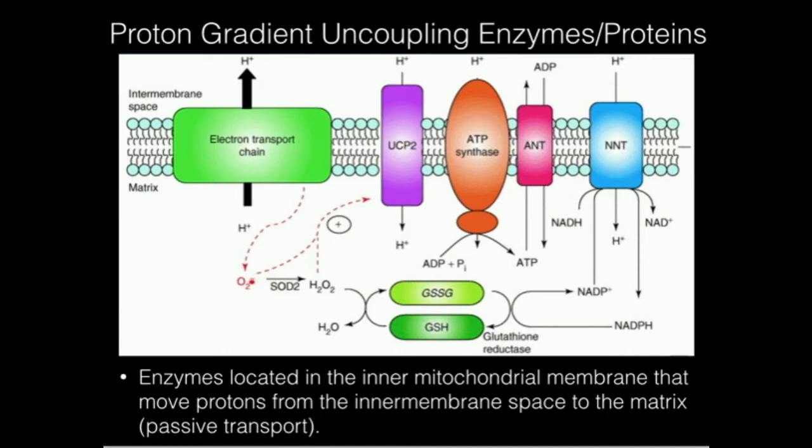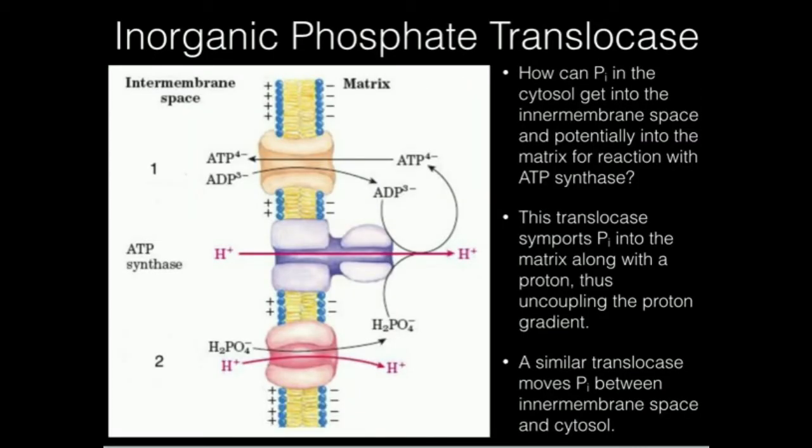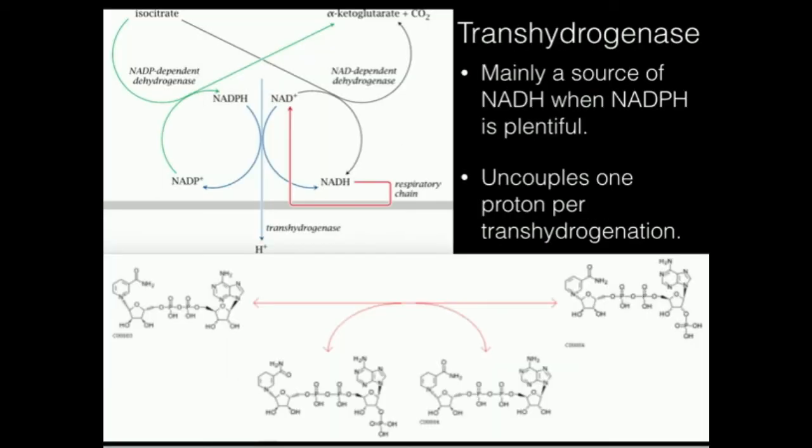So the main two uncoupling proteins we have are going to be the uncoupling protein and the transhydrogenase, and there's another one that's not shown here, and we're actually going to talk about it in another video, and it's termed the inorganic phosphate translocase. You can look later on in this playlist and you'll hopefully see that video, and it'll explain how we get phosphate into the matrix of the mitochondria. It's also coupled with proton movement from the inner membrane space to the matrix.